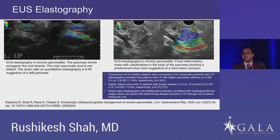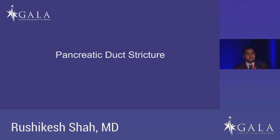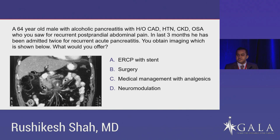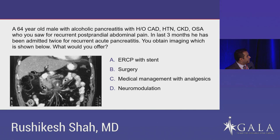Let's dive into pancreatic duct strictures with a case-based discussion. A 64-year-old male with alcoholic pancreatitis, cardiac and renal comorbidities, had post-prandial abdominal pain and two admissions with acute pancreatitis in the last three months. Imaging showed a massively dilated pancreatic duct with a stricture in the head. Would you offer ERCP with stent, surgery, medical management, or neuromodulation? Strictures are very common, occurring in about 18% of chronic pancreatitis patients. The current IAP guidelines recommend ERCP with sequential stenting as the first-line approach for isolated strictures in the head or body.